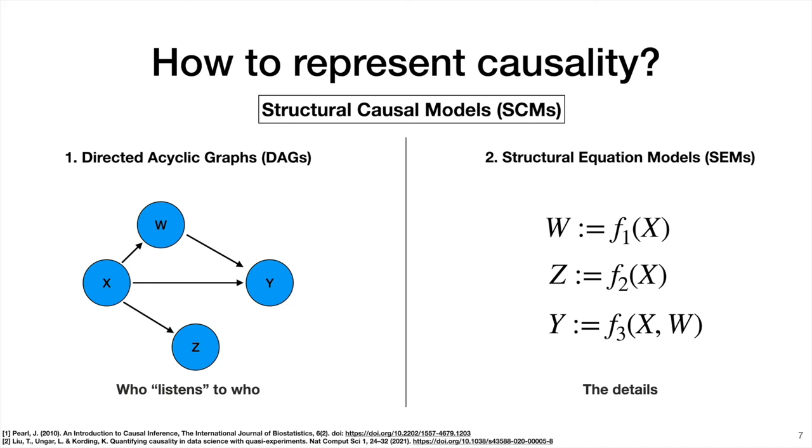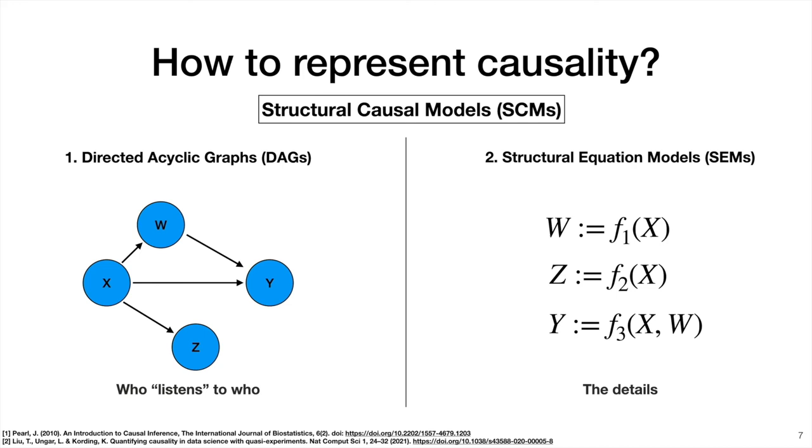And then there's a second part, which are the structural equation models. So these are equations that kind of outline the details of the causal connections. And so they have these funny looking equal signs here, which is basically saying you can't invert these expressions. For example, you can't invert f sub one to get an equation for x in terms of w. So these are two key pieces of causality.